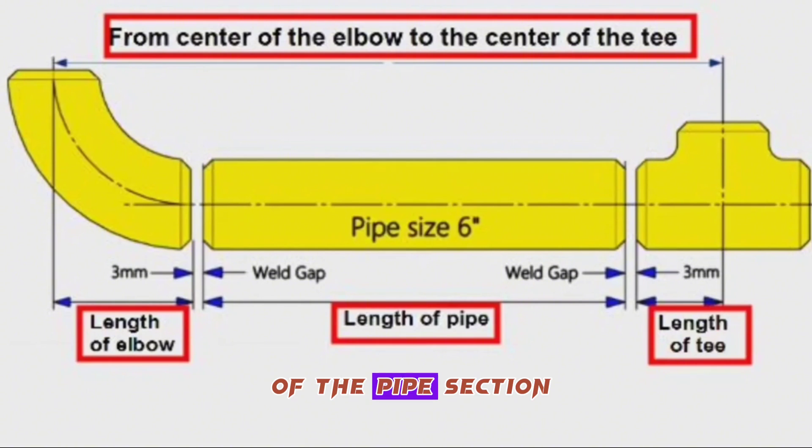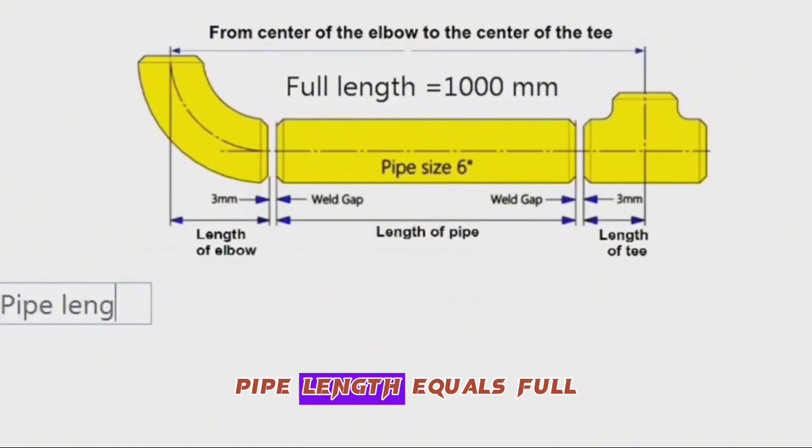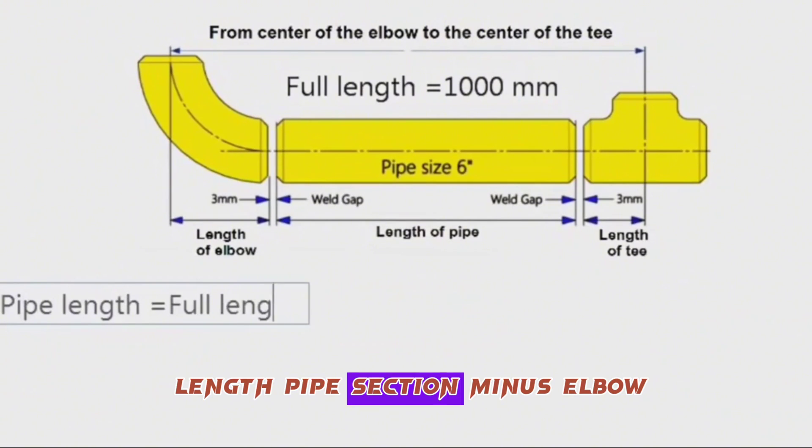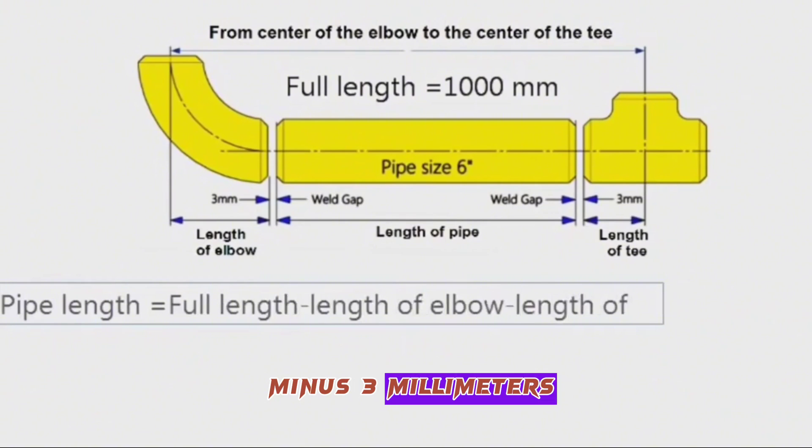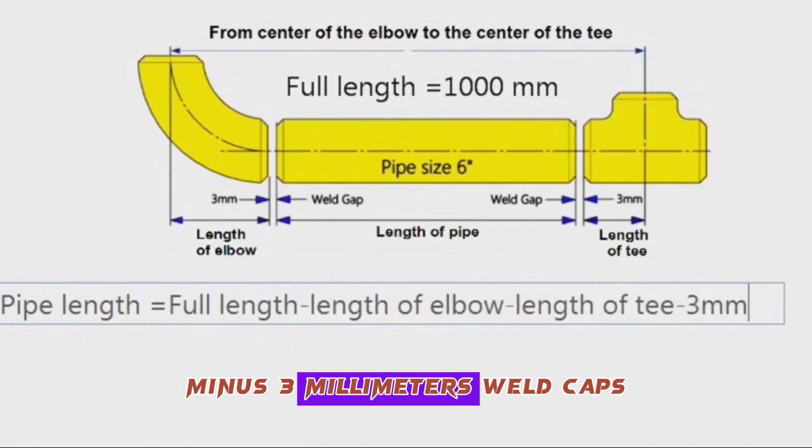To find the length of the pipe section, subtract the lengths of the elbow, T, and weld caps from the full length of the pipe section. In other words, pipe length equals full length pipe section minus elbow dimension, minus T dimension, minus 3 millimeters, minus 3 millimeters weld caps.